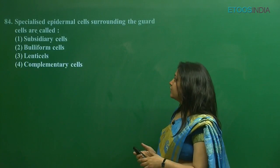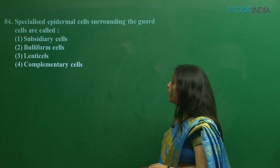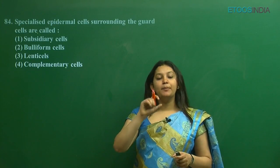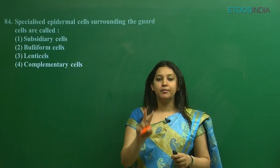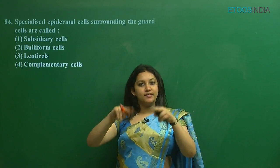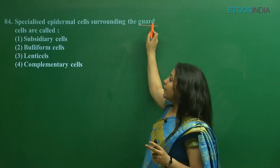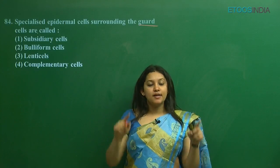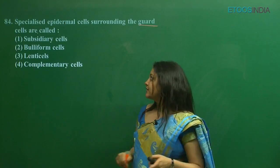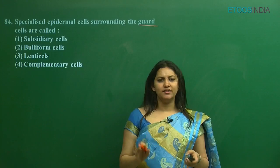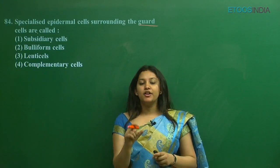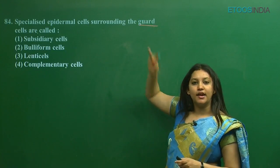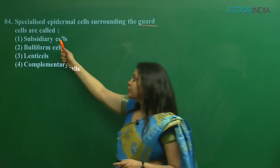The next question is: specialized epidermal cells surrounding the guard cells are called what? As discussed in the structure of stomata, the stomatal aperture is surrounded by two specialized epidermal cells called guard cells. Near the guard cells, there are further specialized epidermal cells — those are called subsidiary cells.